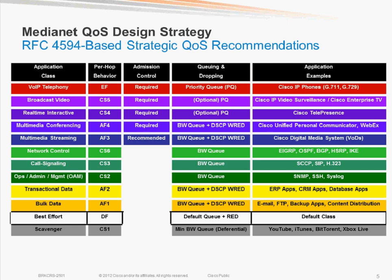The next class of service is multimedia streaming — a unidirectional flow similar to broadcast video class, but not requiring a strict priority real-time service. We have a few control classes: network control, which includes routing protocols, HSRP, or anything that helps keep the network control plane up — typically marked by default on our routers as Class Selector 6. Signaling traffic is the same type of traffic but for the IP telephony or IP video telephony infrastructure. Then we have an OAM class — Operations, Administration, and Management — for products like ActionPact or any other traffic polling, updating, configuring, or collecting MIBs.